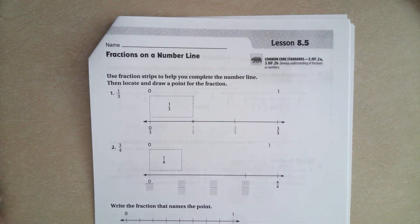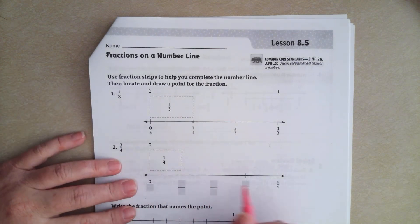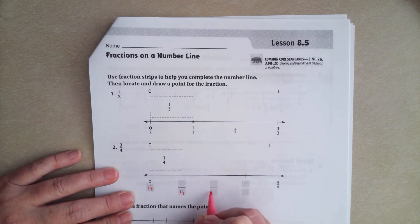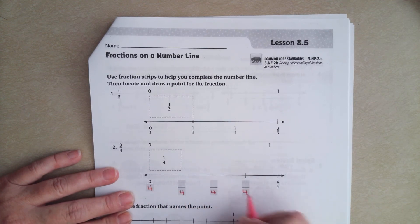We're going to go ahead and get started with number 2. So all we're doing is labeling a number line, basically. Our denominator on all of these is going to be a 4, because there are 4 equal parts.